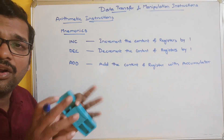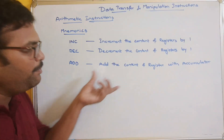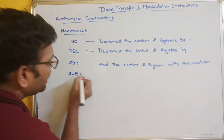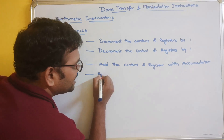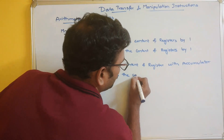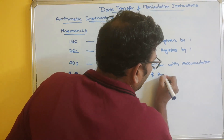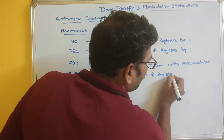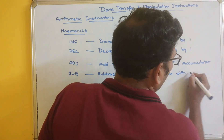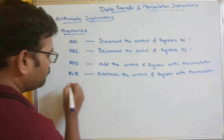If you are giving two different registers, then the addition of the content of both registers will happen. So ADD simply means adding. Next, SUB is a mnemonic which subtracts the content of a register with the accumulator if there is only one operand.